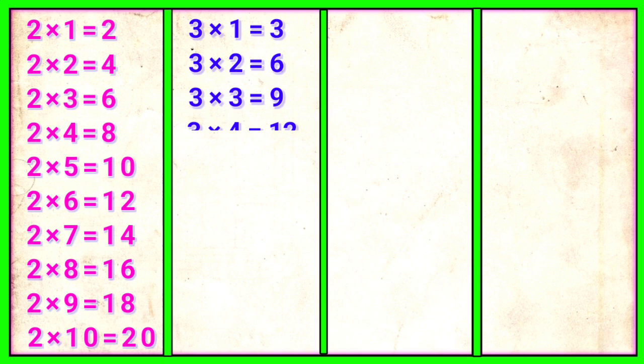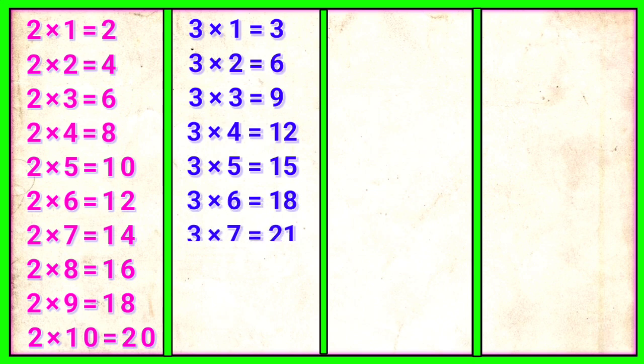3 4s are 12, 3 5s are 15, 3 6s are 18, 3 7s are 21, 3 8s are 24.